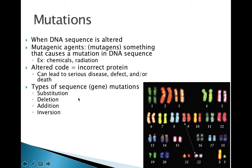Mutations can come up in four different ways. We have something called a substitution. Substitution is simply when the wrong letter goes in the wrong place. So if your code is supposed to be A, T, and C, and somehow you wind up with A, T, and G — well, you substituted a G where a C should be. That would be a wrong letter in the wrong place.